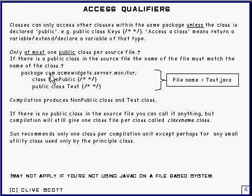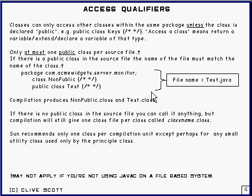Here's an example. We've got a package here: com.acmi.widget.server.monitor. In the package there are two classes — one of them is non-public, and one of them is a public class called 'test'. Now if all of this sits in one file, the file name has to be called test.java, because the public class there is called 'test'. The source file name has to match the name of the public class, and you can only have one per source file.